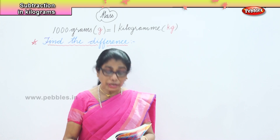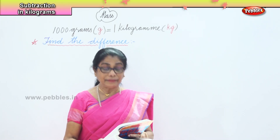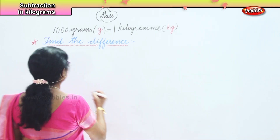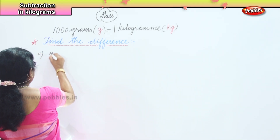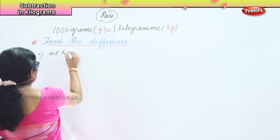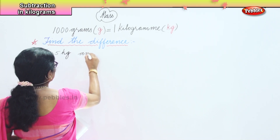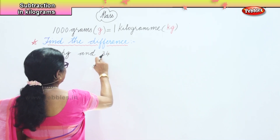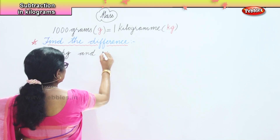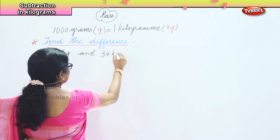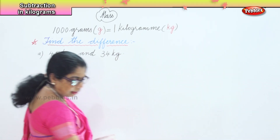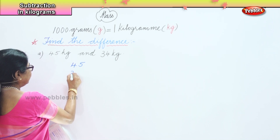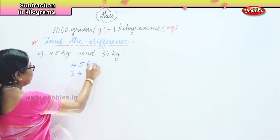The first sum we have is 45 kilograms and 34 kilograms. We have to find the difference between 45 kilograms and 34 kilograms. First we do arranging — arranging the numbers correctly: 45 and 34 kg.